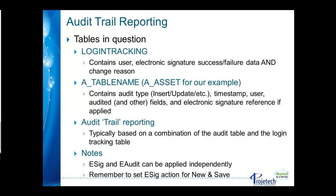From a reporting standpoint, the login tracking table will contain the primary information around the electronic signature, including success or failure and any reason that has been entered. The audit table — A-underscore-table-name — will contain the audit information including the actual data from those fields being audited, each time there's a change, along with a timestamp, recognition of the individual performing the update, and a tie-in to the electronic signature reference if applied. Audit trail reporting essentially looks at a combination of what's in the login tracking table and the audit table.